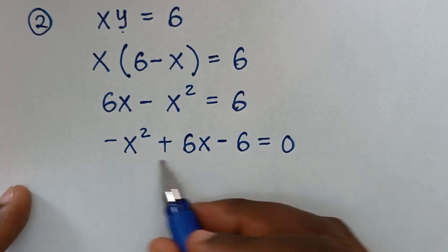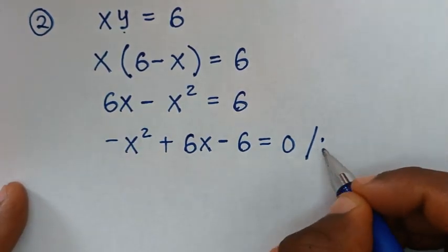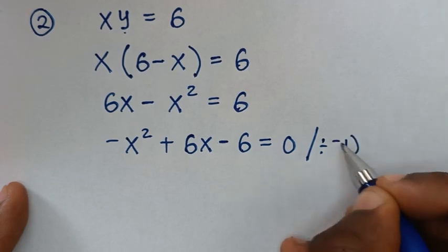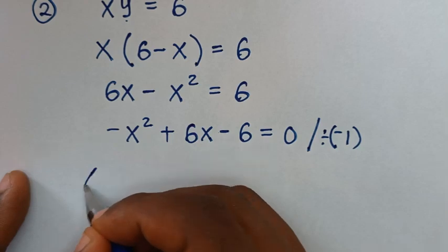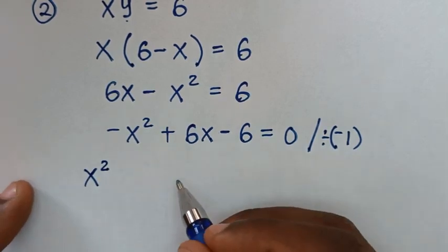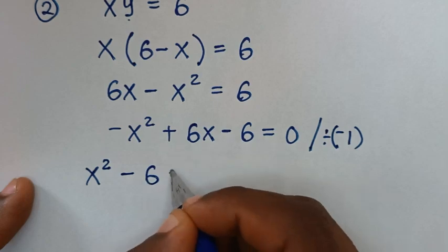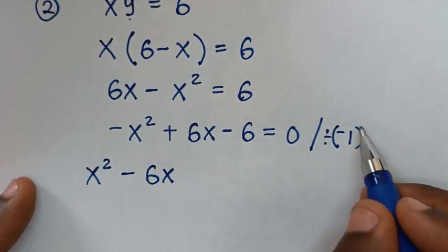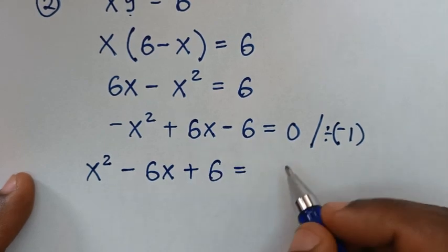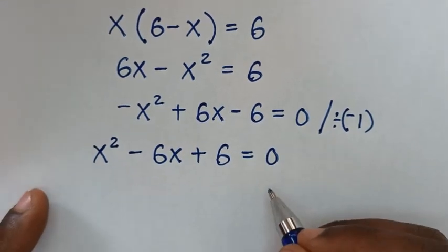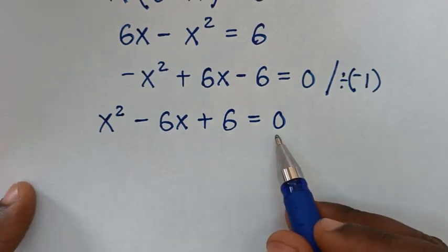To make the leading coefficient positive, we divide the whole equation by negative 1. So negative x squared divided by negative 1 is positive x squared, 6x divided by negative 1 is negative 6x, and negative 6 divided by negative 1 is positive 6, giving us x squared minus 6x plus 6 equals 0. We'll solve this quadratic equation using the quadratic formula.